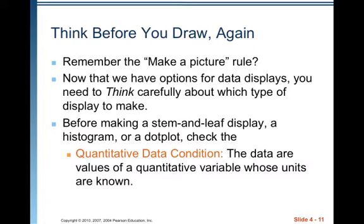Think before you draw. Remember the make-a-picture rule? Now that we have options for data displays, you need to think carefully about which type to make. Before making a stem and leaf display, histogram, or dot plot, check the quantitative data condition: the data are values of a quantitative variable whose units are known. Your book puts dot plots in the strictly quantitative category, though really you could use a form of dot plot for categorical data as well. For stem and leaf displays and histograms you must have quantitative data.